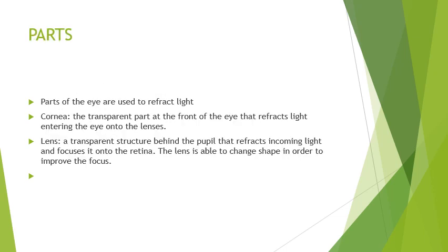The parts of the eye used to refract light. The cornea is the transparent part at the front of the eye that refracts light entering the eye onto the lens. The lens is a transparent structure behind the pupil that refracts incoming light and focuses it onto the retina. The lens is able to change shape in order to improve the focus.